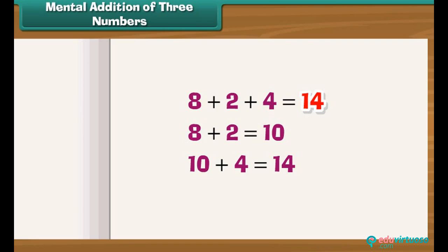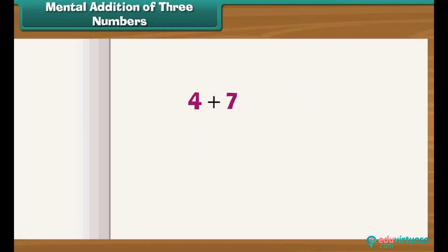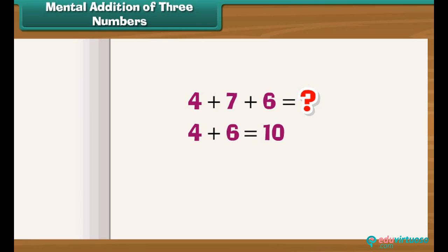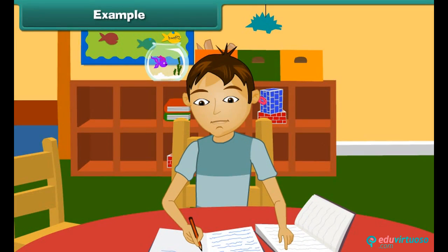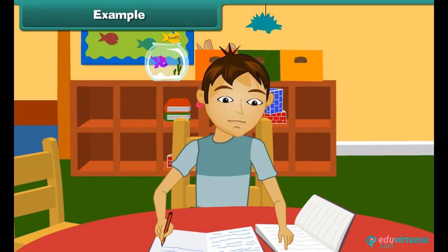What is 4 plus 7 plus 6? We add 4 and 6 first because 4 plus 6 equals 10. Now we add 7 to the 10: 10 plus 7 equals 17. So 17 is the answer.